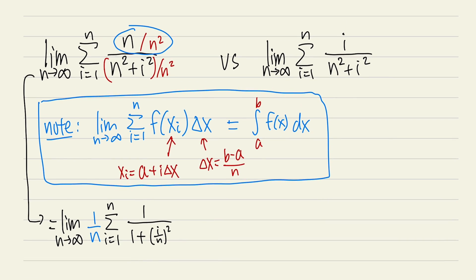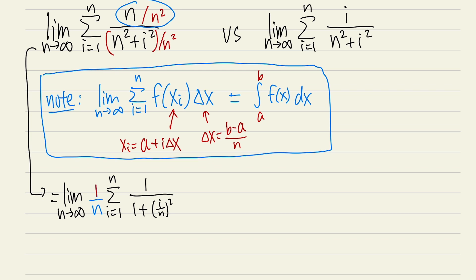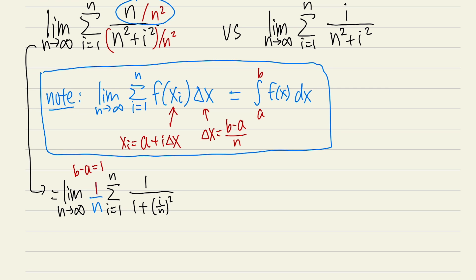Pay attention to the 1/n: the 1 here tells us b − a = 1, so the limits of integration can go from 0 to 1, 1 to 2, etc. We'll just start with 0 — it's easier that way. And the i/n is the x, which corresponds to f of x_i. So this is the integral from 0 to 1.